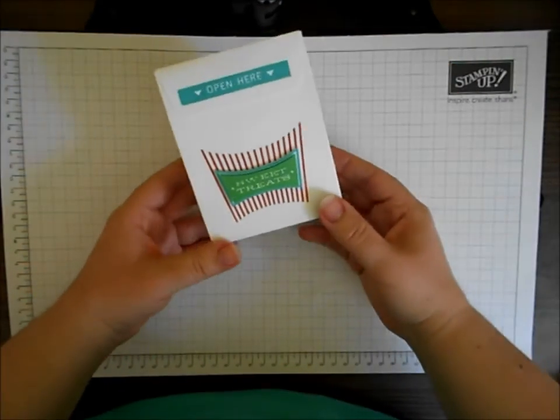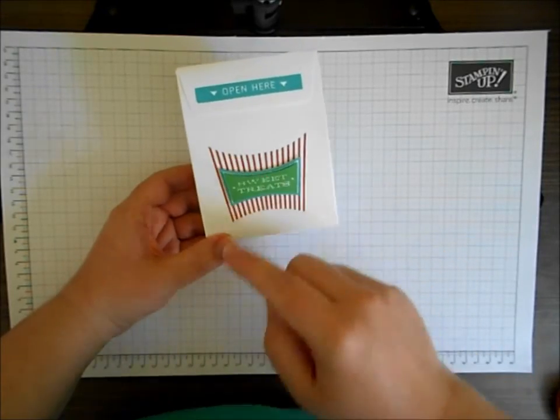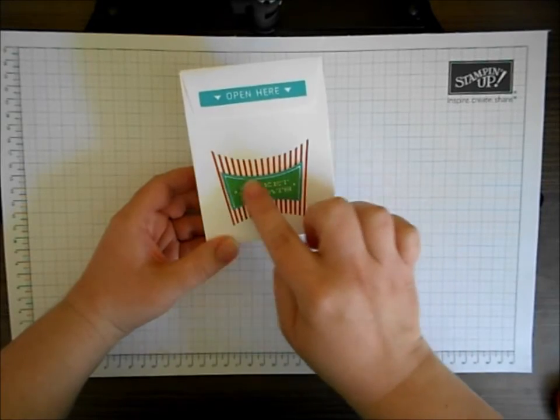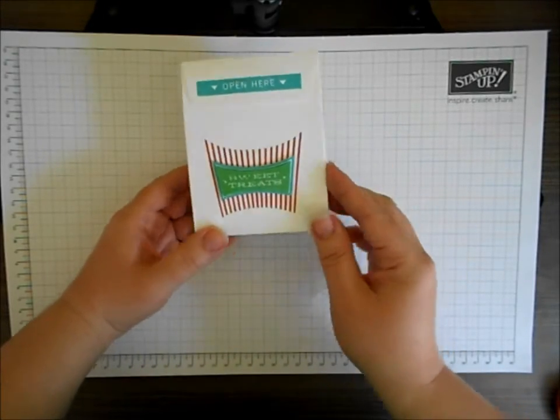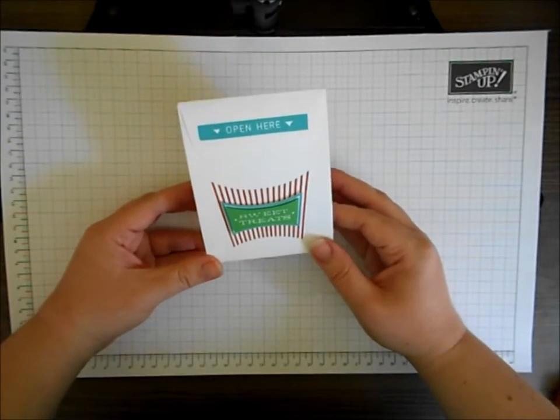So here's my original. So I went ahead and stamped this sweet treats element that's in the stamp set, first in Bermuda and then in Cucumber Crush, snipped them out and layered them up on some foam dots, and there we go, finished treat bag.